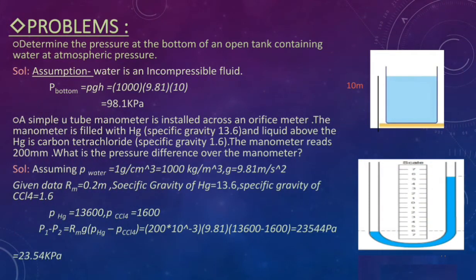Problem 1: Determine the pressure at the bottom of an open tank containing water at atmospheric pressure. Assuming water is incompressible, the pressure at the bottom is P = ρgh. Substituting ρ = 1000 kg/m³, g = 9.81 m/s², and h = 10 m, the pressure at the bottom is 98.1 kPa.